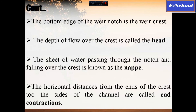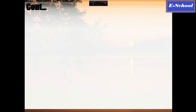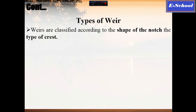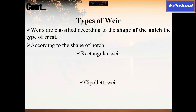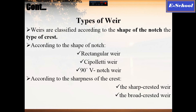These are the different parts of the weir — you can read this from the slide. There are different types of weirs based on the shape of the notch and type of the crest. These include the rectangular weir, the Cipolletti weir, the 90-degree V-notch weir, the sharp-crested weir, and the broad-crested weir.